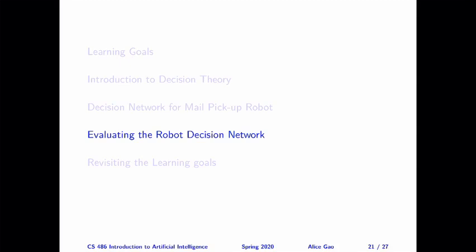Hello, everyone. This is Alice Gao. In this video, we are finally going to finish the mail delivery robot example. We are going to look at the robot decision network we came up with and decide on the best action the robot should take to maximize its expected utility.